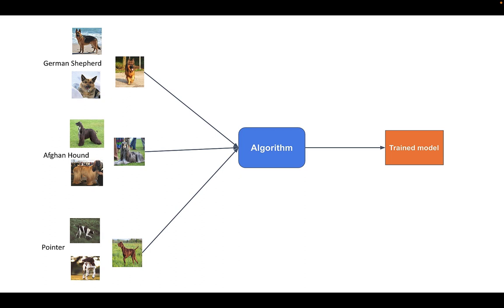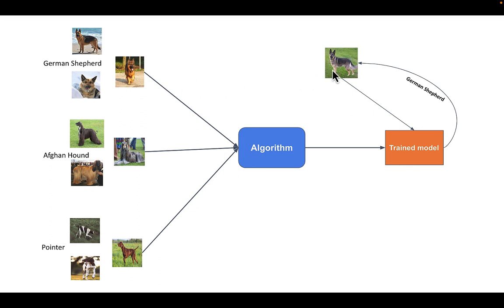In this trained model, there is a specific pattern for each breed of dog — a specific pattern for German Shepherd, Afghan Hound, and Pointer. When we pass an image to this trained model, based upon the pattern it contains, it will make a prediction that German Shepherd is present in the image. Our model predicted correctly because we trained it on images of German Shepherd, so our model recognized the breed and gave us the result. That is the process of training a machine learning model.